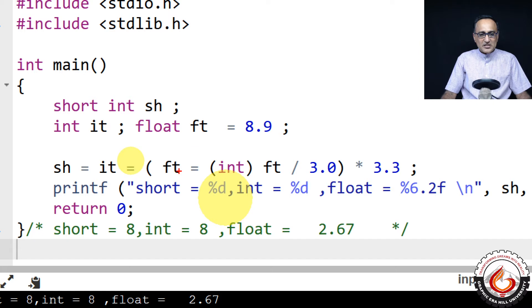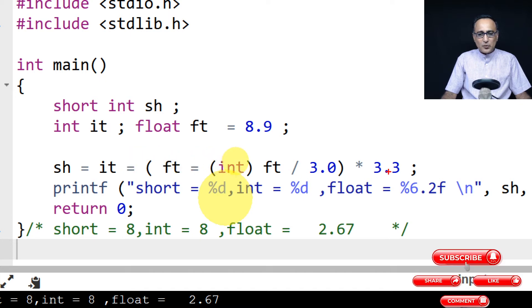So what happens is float will now become 2.67. That particular thing will get multiplied by 3.33.